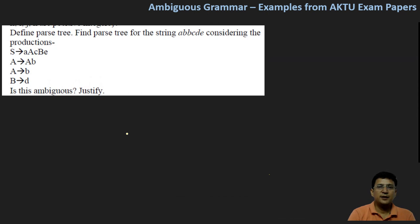So let's see if the derivation trees are possible for this given grammar. The string, let's note down the string. This is A, D, B, C, D, E. So this is what we have to bring out from the derivations.